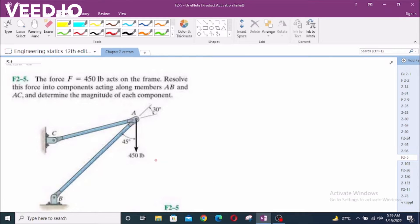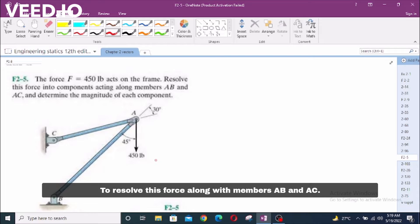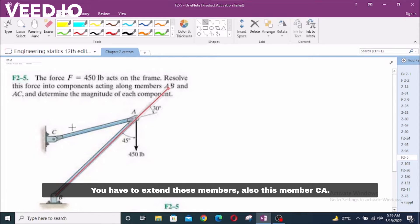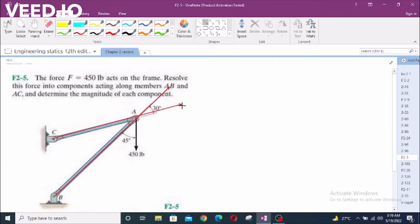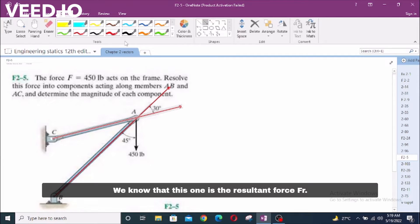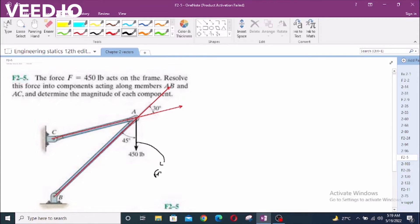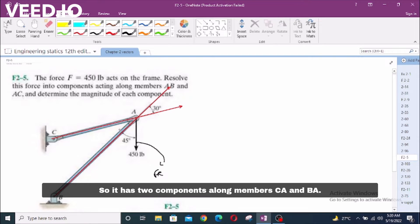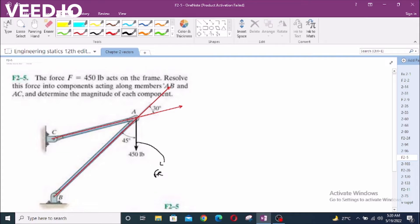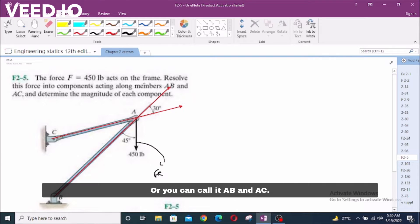To resolve this force along members AB and AC, you have to extend these members. This member CA. We know that this one is the resultant force FR, so it has two components along member CA and BA, or you can call it AB and AC.